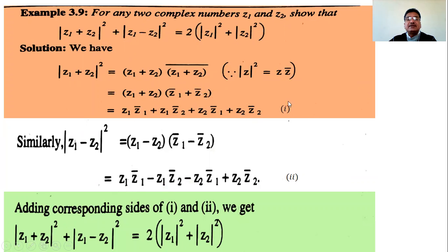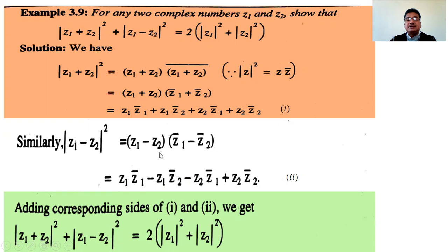Then consider |z1 - z2|² = (z1 - z2)(z1 - z2)̄ = (z1 - z2)(z̄1 - z̄2). Expanding gives four terms: z1·z̄1 - z1·z̄2 - z2·z̄1 + z2·z̄2. Call this equation (2).